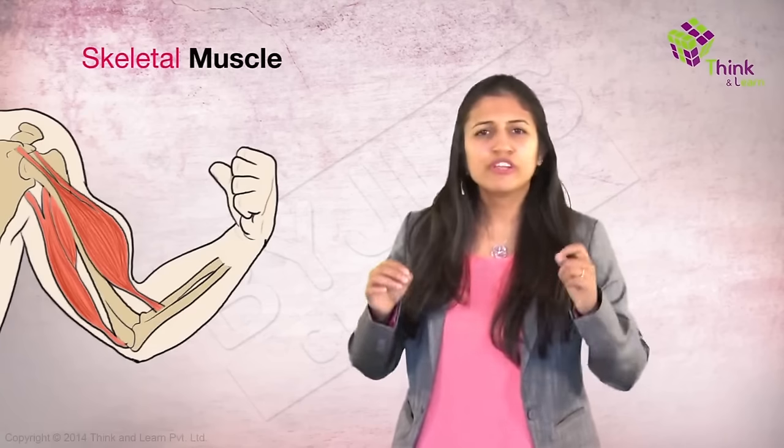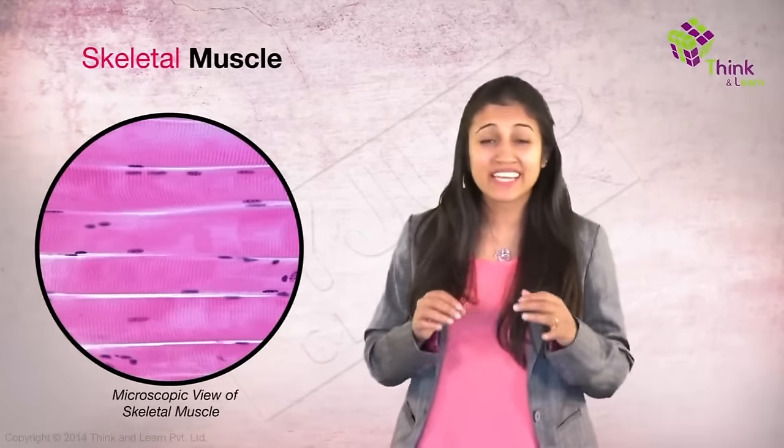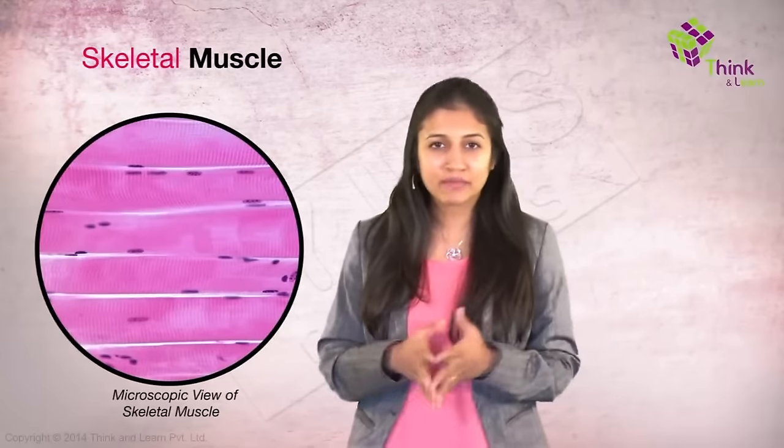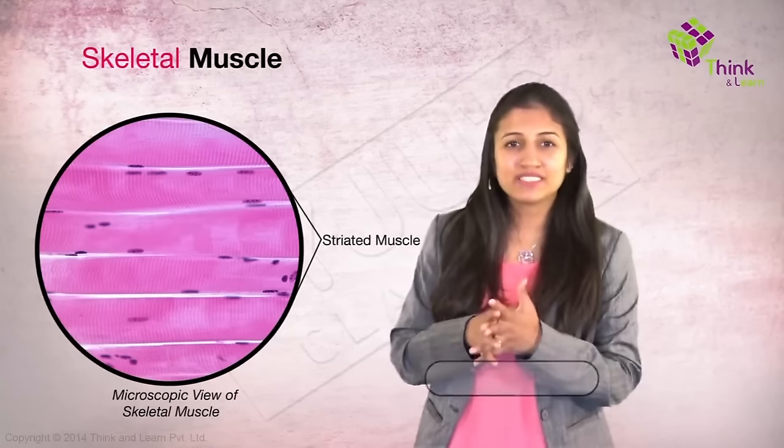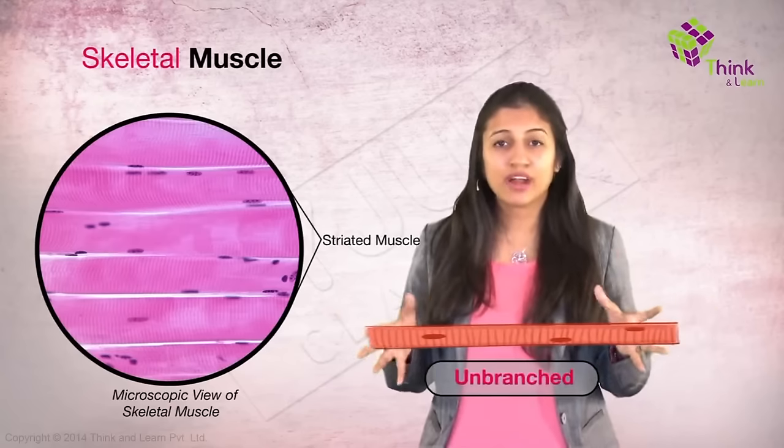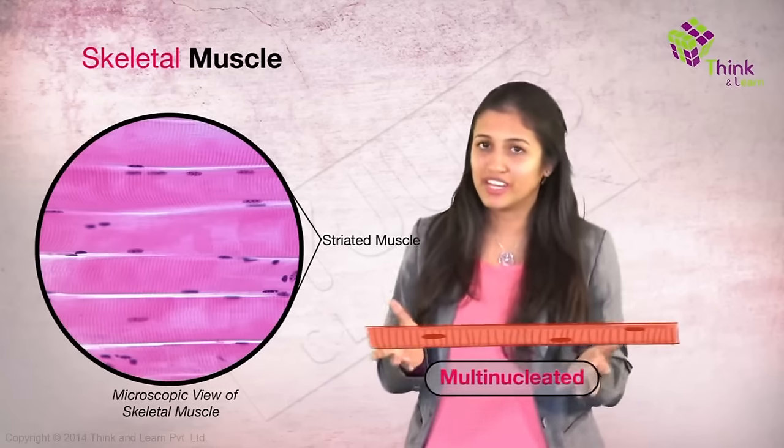So now back to how skeletal muscles look. How exactly do they look? When you stain them and look at them under the microscope, some striations or bands can be seen. That's why they're also called striated muscles. The cells in the muscles are long, cylindrical, unbranched and multinucleated. Multinucleated means having many nuclei.